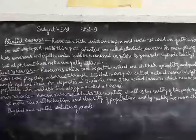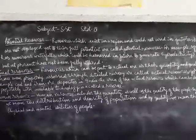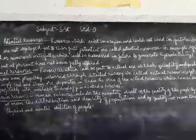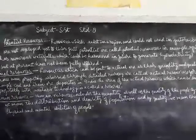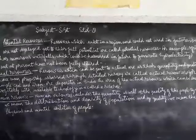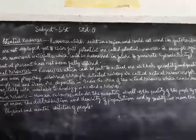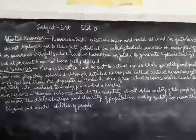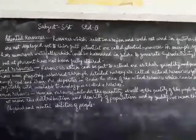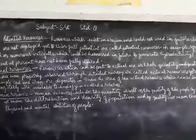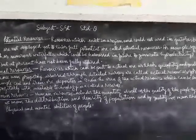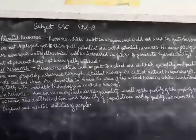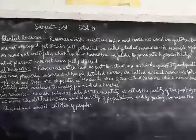The second type of resources are actual resources, which can be put to actual use. We can use these resources, and their quality and quantity have been properly assessed through detailed survey. For example, there are coal and iron ore deposits in India which can be developed for profit.